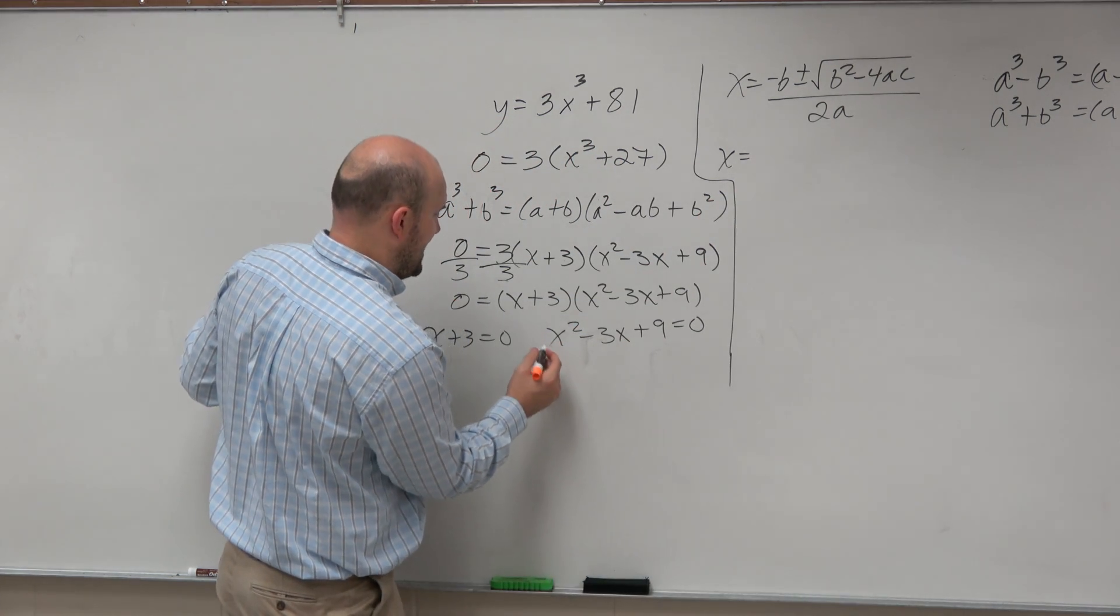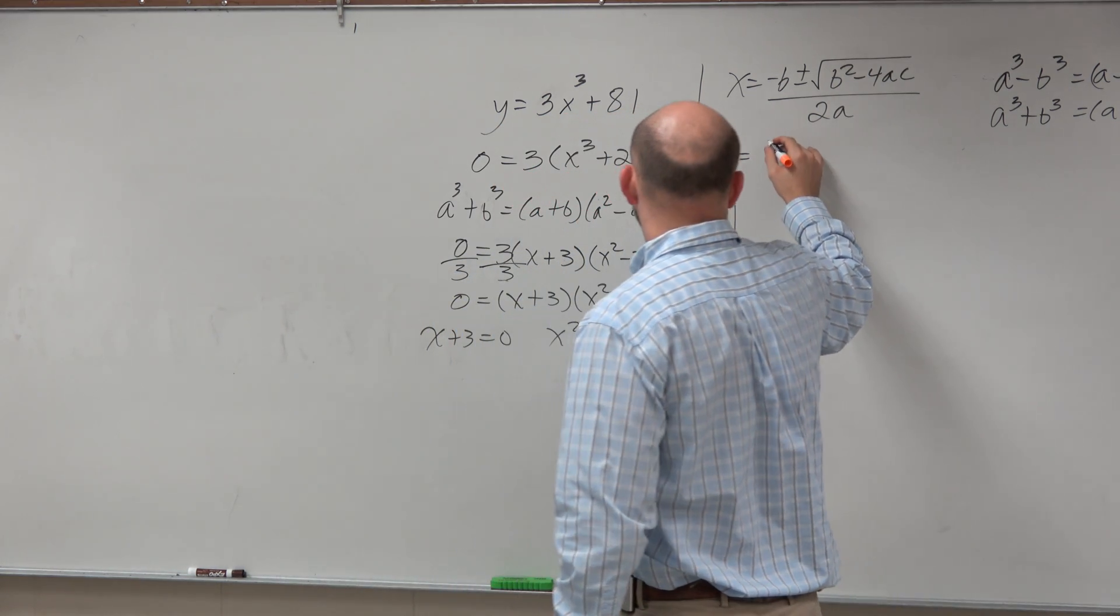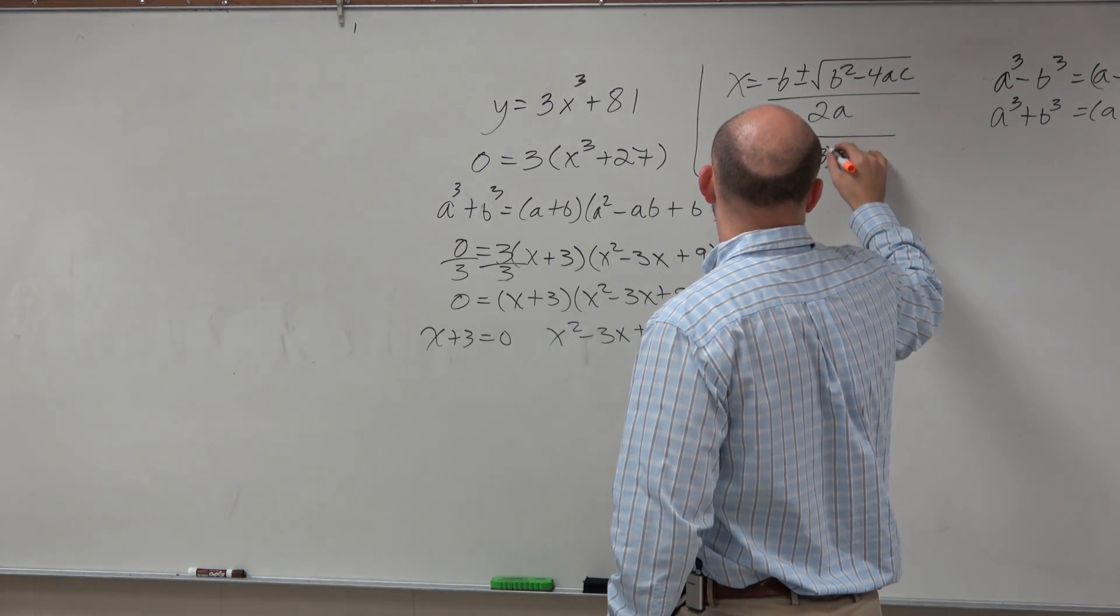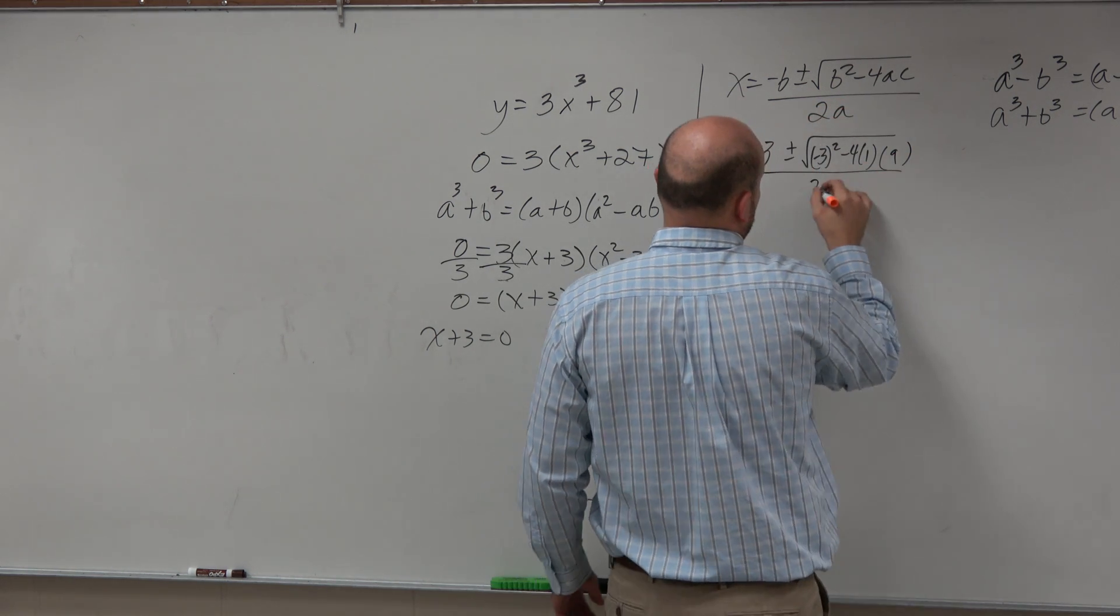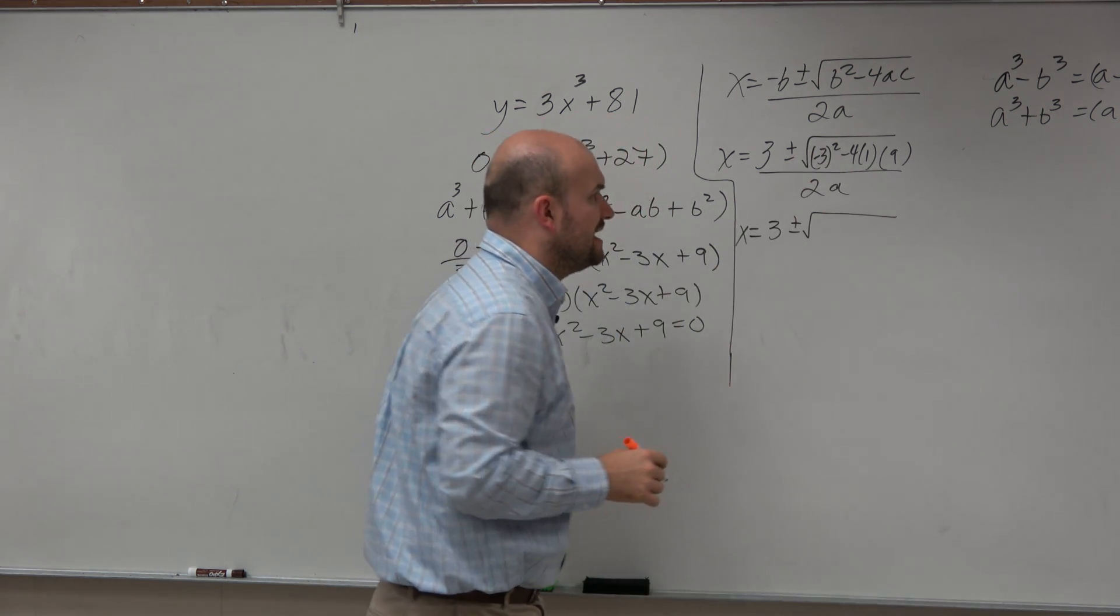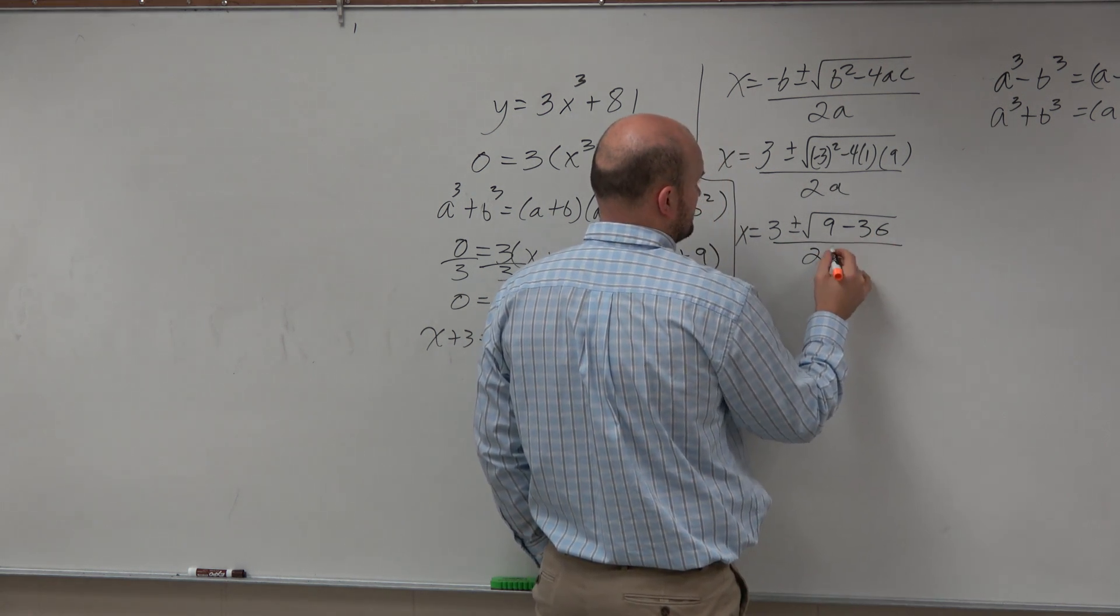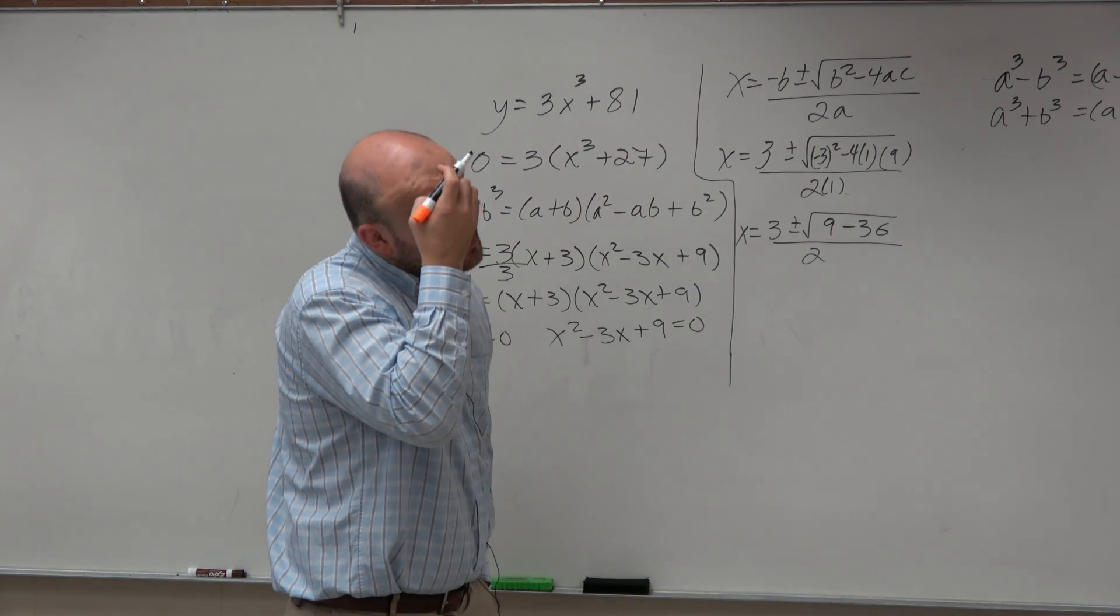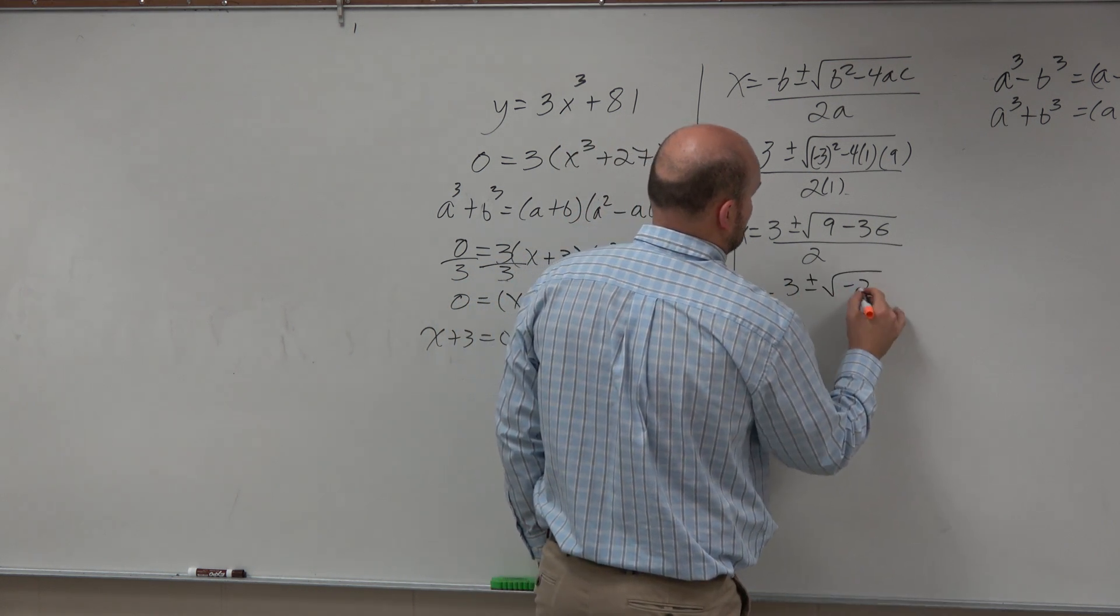Now, all I'm going to do is find my a, which would be 1, my b is negative 3, and my c is 9. I'm just going to plug them in. So therefore I have 9 minus 36. 2 times 1, which is 2. Now, 9 minus 36 is going to be a negative 27.